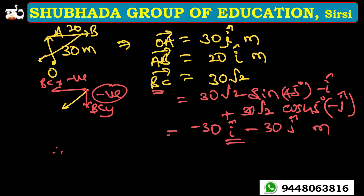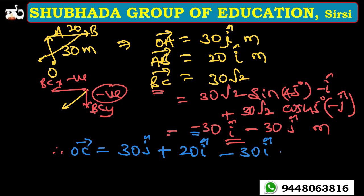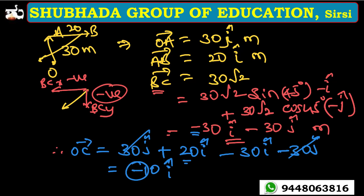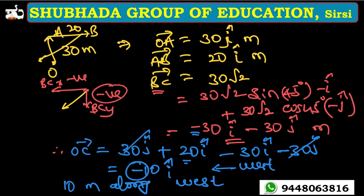Adding all vectors: OC vector = 30ĵ + 20î + (−30î − 30ĵ) = (20−30)î + (30−30)ĵ = −10î. This is 10 meters along the negative x-axis, which means 10 meters along the west direction. That is the right answer for this question.